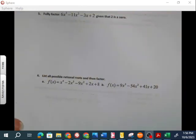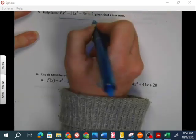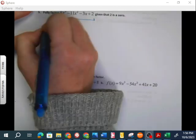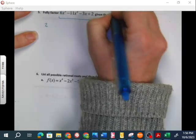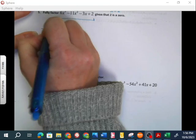Alright, so now we're given a zero, we're going to completely factor this. So 2 is a zero. When they tell you it's a zero, that's the same thing as saying x equals 2, which means that can go in the box.